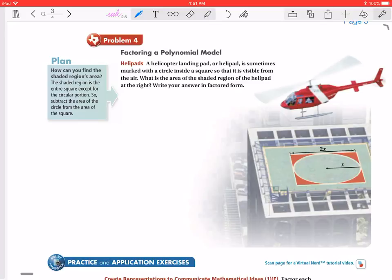So in this problem we have a helicopter landing pad, or a helipad, and it's sometimes marked with a circle inside a square so that it's visible from the air. We want to find out the area of the shaded region of the helipad at the right, and then we want to write our answer in factored form.